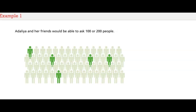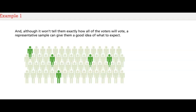Adalia and her friends would be able to ask 100 or 200 people. Although it won't tell them exactly how all of the voters will vote, a representative sample can give them a good idea of what to expect.